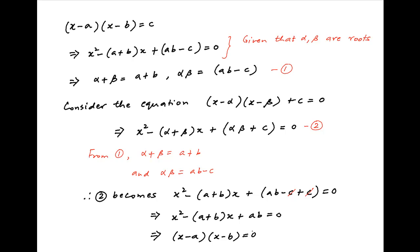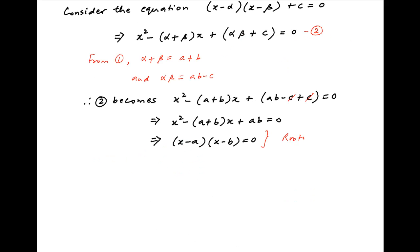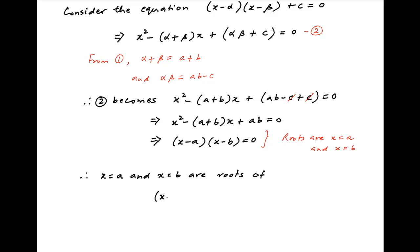This implies that (x − a)(x − b) = 0, and therefore the roots of this quadratic equation are x = a and x = b. To summarize: x = a and x = b are the roots of the quadratic equation (x − alpha)(x − beta) + c = 0, and this is the required answer.